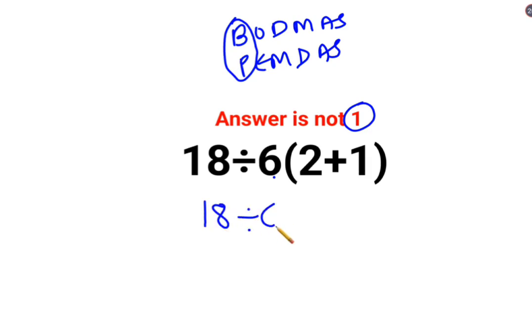We will keep the rest of the question as it is, and 2 plus 1 is 3. Since there is no sign between 6 and the bracket, it means it is multiplication.